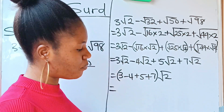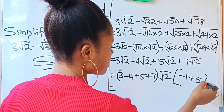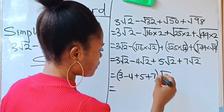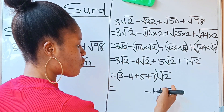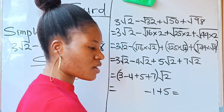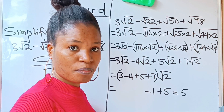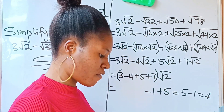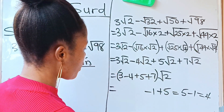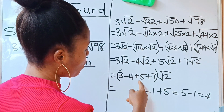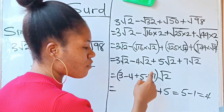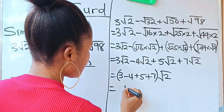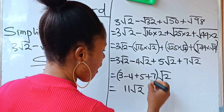Now we work out the arithmetic: 3 minus 4 gives minus 1. Minus 1 plus 5 — since plus 5 minus 1 equals 4 — gives us 4. Then 4 plus 7 gives us 11. So the expression equals 11√2, and that is our final answer.